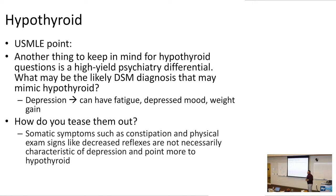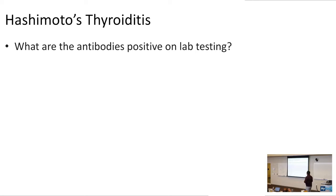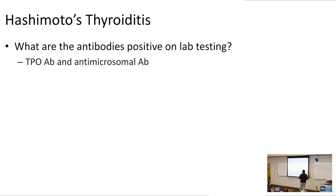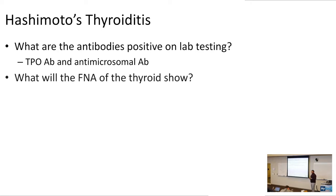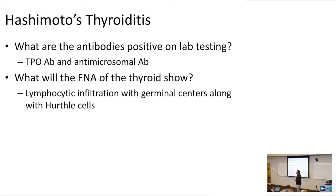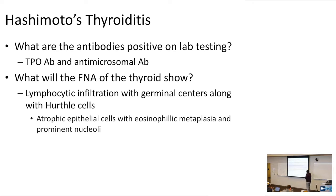The classic hypothyroid diagnosis is Hashimoto's thyroiditis. Antibodies positive for Hashimoto's include antibodies to thyroid peroxidase as well as antimicrosomal antibodies. Fine needle aspiration of the thyroid in Hashimoto's disease shows lymphocytic infiltration with germinal centers along with Hürthle cells. Hürthle cells are atrophic epithelial cells with eosinophilic metaplasia and prominent nucleoli — a buzzword for Hashimoto's.